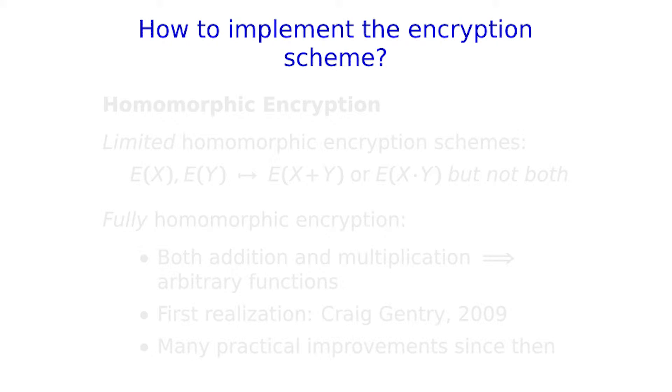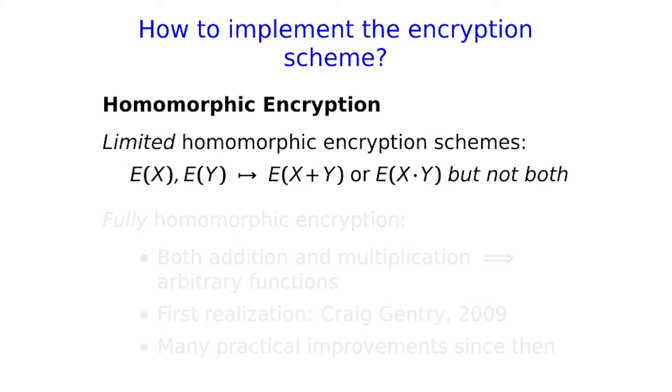The key point is that the parties controlling the decryption keys don't have to be involved at all in the computation while the blockchain is being updated. They can be completely offline and just come in at any time to decrypt. How that works really depends on the application. The more daunting question is how to actually implement this encryption scheme — really what we're talking about is computing on encrypted data, also known as homomorphic encryption.